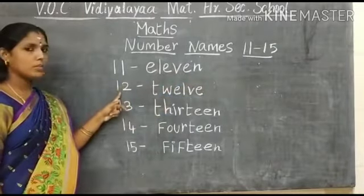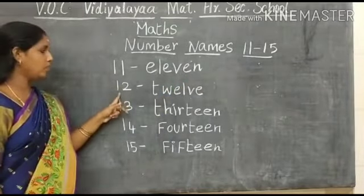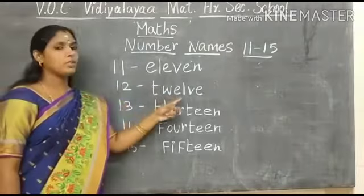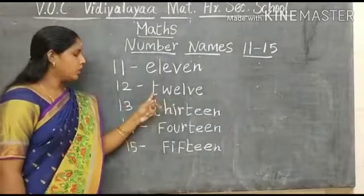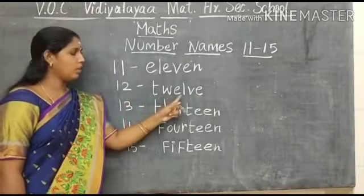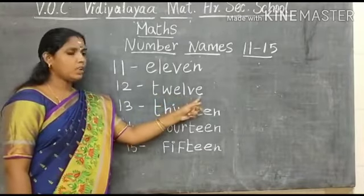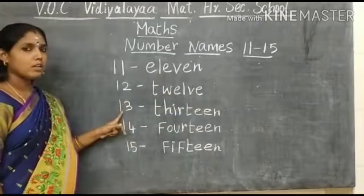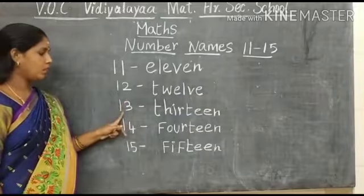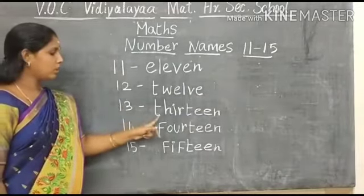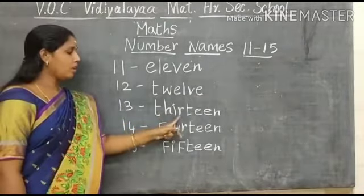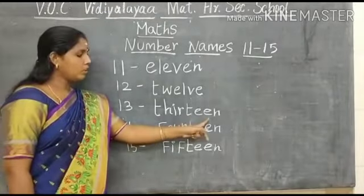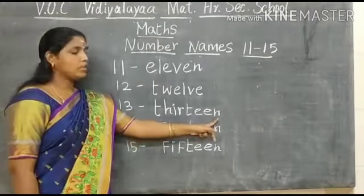The next number — what number is this? This is number 12. What is the spelling of 13? T, H, I, R, T, E, E, N. 13.